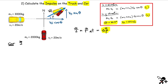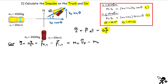We'll start with the car. The impulse on the car equals the change of momentum of the car: p-final of the car minus p-initial of the car. These are two-dimensional vectors. The final momentum is mass of the car times its final velocity vf, and the initial momentum is mass of the car times vc. Factoring out the mass of the car, we get mc times the difference of the final and initial velocity vectors.